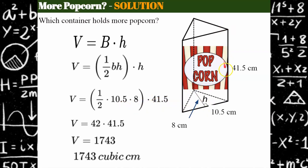The height of the prism connecting the two triangular faces is 41.5. Half of 8 is 4, times 10.5 is 42, times the height gives me a volume of 1,743 cubic centimeters.